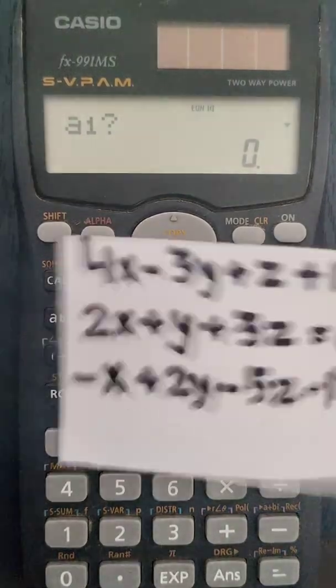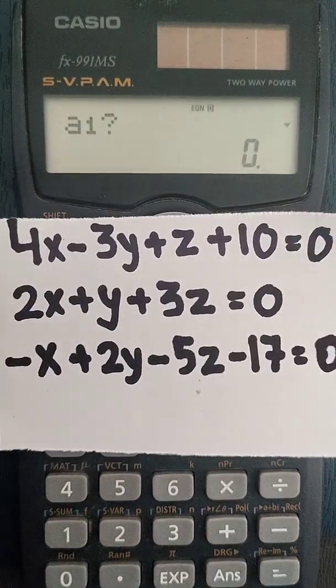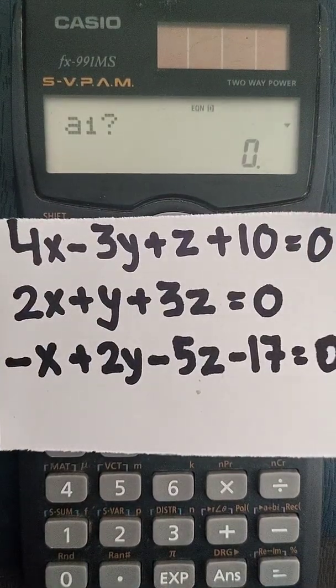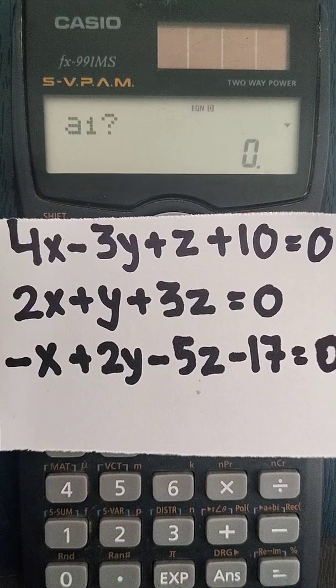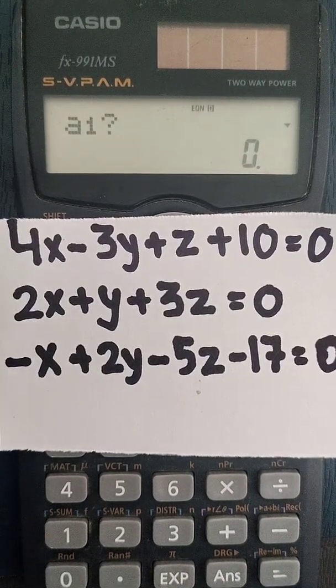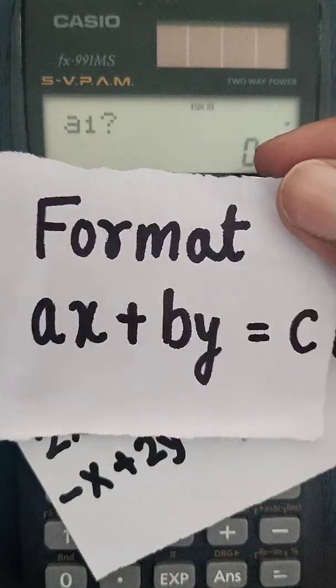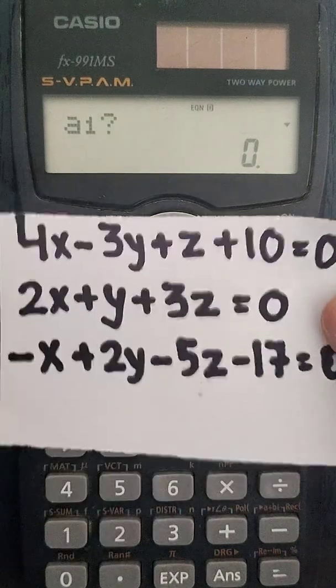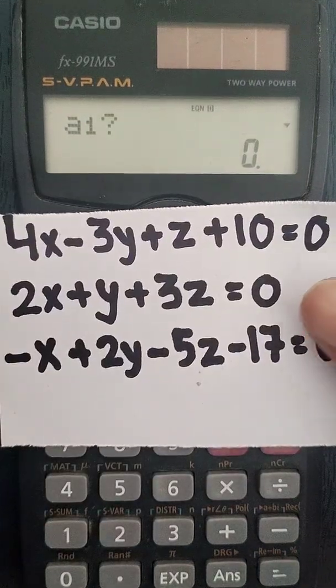Now here, if you observe the equation, the equation is given in ax plus by plus cz plus d equal to zero, but the format that we have discussed is in the form of ax plus by plus cz equal to d. So what we are going to do is we are going to put it into that format.